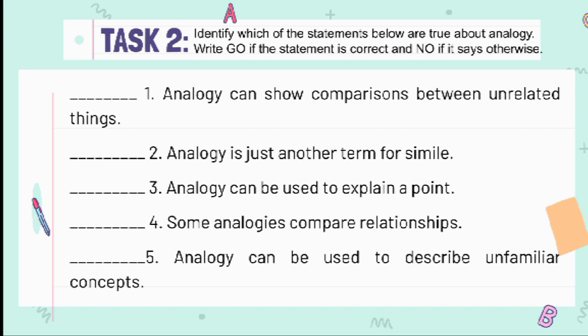Number 1: 'Analogy can show comparison between unrelated things.' The answer is go. Number 2: 'Analogy is another term for simile.' The answer is no. Number 3: 'Analogy can be used to explain a point.' The answer is go. Number 4: 'Some analogies compare relationships.' The answer is go. Number 5: 'Analogy can be used to describe unfamiliar concepts.' The answer is go.